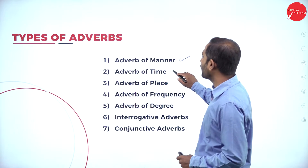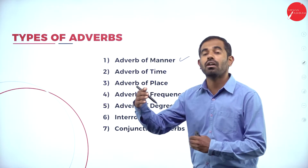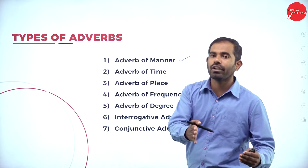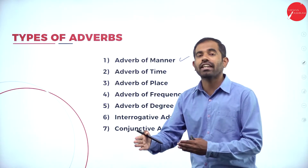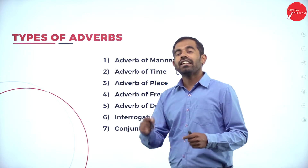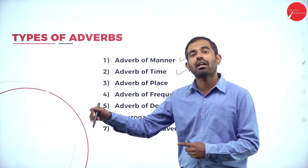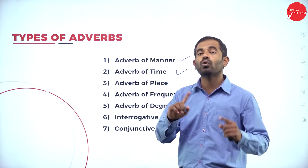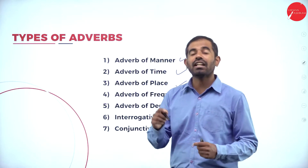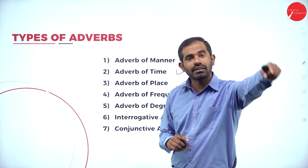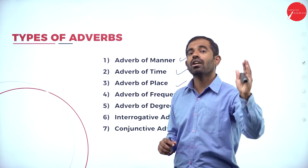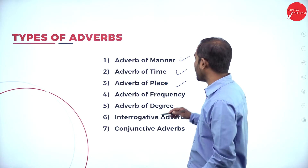I've already discussed adverb of manner, which means in what way a person or a thing takes place — for example, 'He walked very slowly.' Slowly is a manner adverb. Adverb of time: 'He is standing there now; maybe he would not stand there later.' Now and later are adverbs of time. Adverb of place: 'He is standing there' — there answers where he is standing.